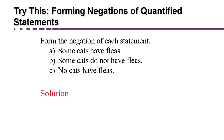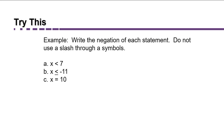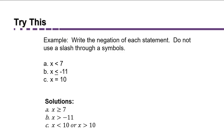Now test yourself — pause the video and write the negation of each statement. The negation of 'some cats have fleas' is 'no cats have fleas.' The negation of 'some cats do not have fleas' is 'all cats have fleas.' The negation of 'no cats have fleas' is 'some cats have fleas.' For inequalities: the negation of x < 7 is x ≥ 7; the negation of x ≤ -11 is x > -11; and the negation of x = 10 is x < 10 or x > 10.